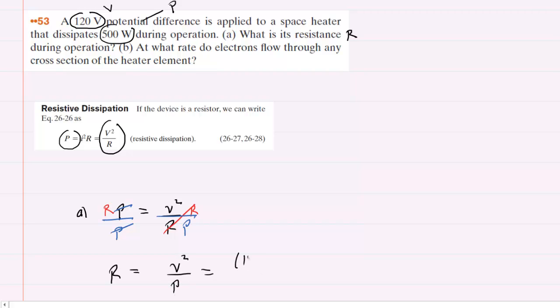We'll plug in the known values of 120 volts for the potential difference and 500 watts for power. When we compute this, we get 28.8, and the standard unit of resistance is ohms. So this is the correct answer to part A.